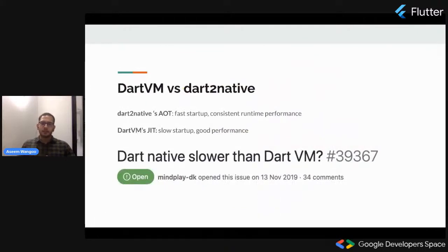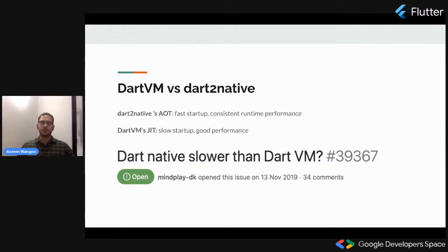Let's talk about the comparison between dart run and dart2native. There is an open issue addressed by people using this feature that dart2native is somewhat slower than dart run. dart run uses JIT, or just-in-time compiler, which is good for development purposes but has slow startups, though it guarantees good performance suited for development.